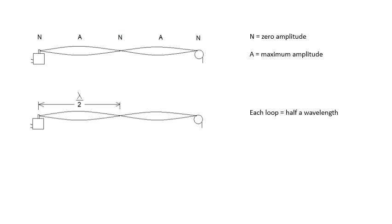Each loop is half a wavelength. So for the first harmonic, the length of the string is half a wavelength. For the second harmonic, the length of the string is a wavelength. Each loop is half a wavelength.